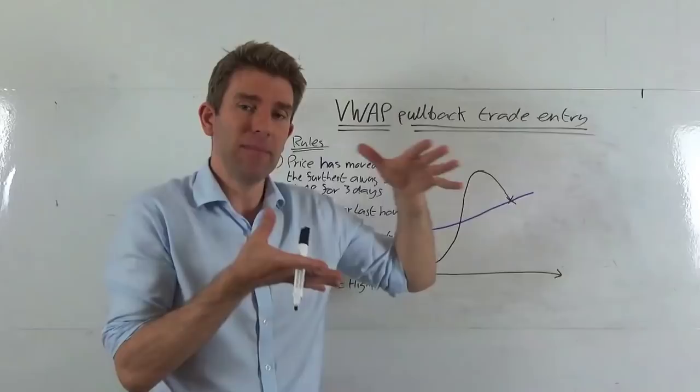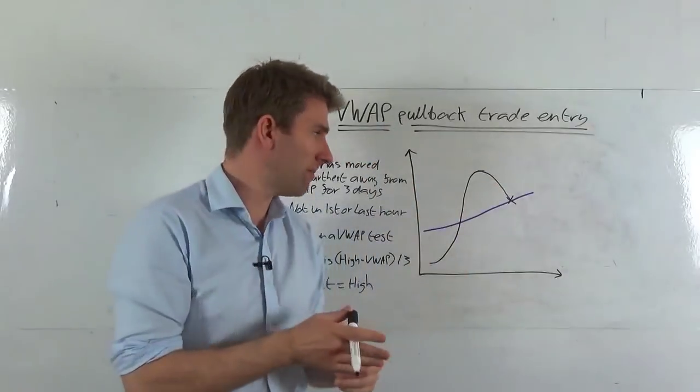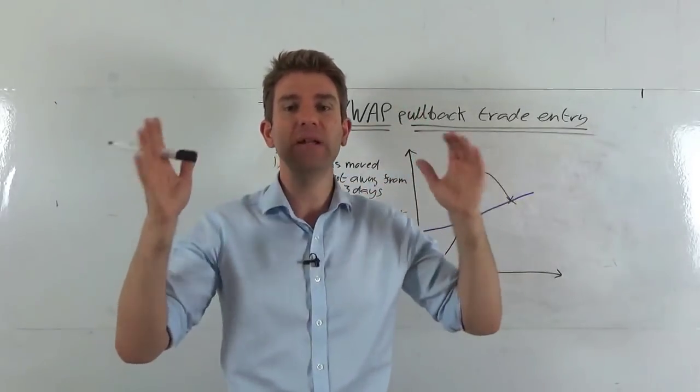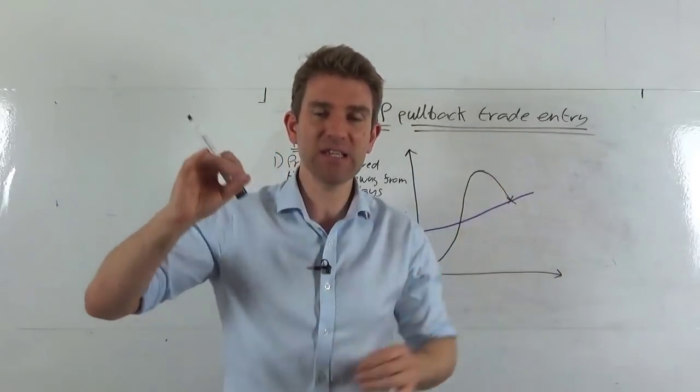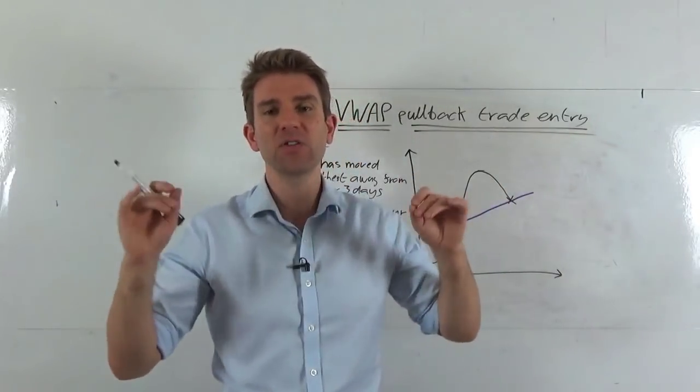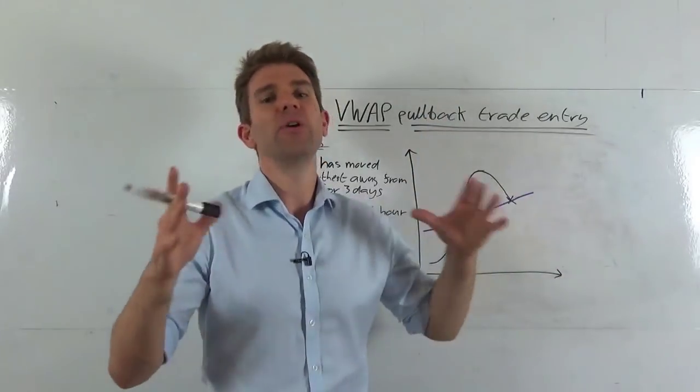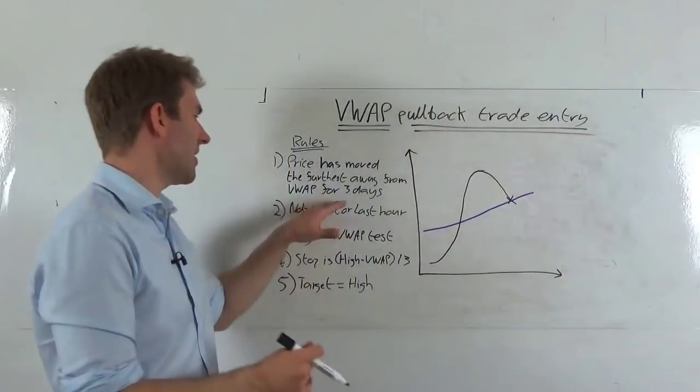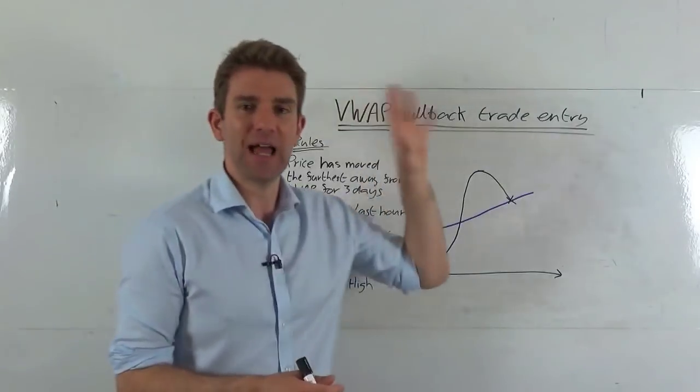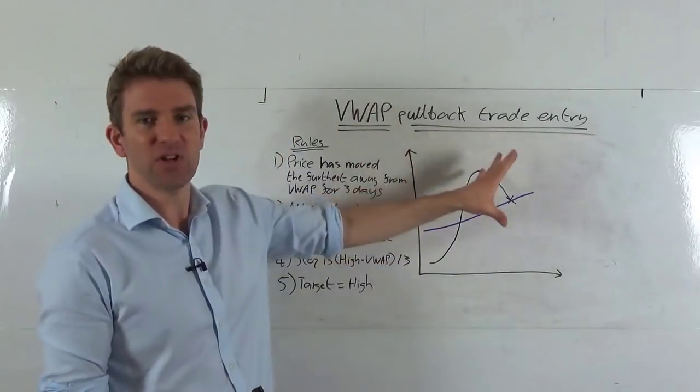But if it's still going, it means that there's something interesting going on. We're looking for the furthest move that's been in the last three days, so the biggest distance away from the VWAP in the last three days. And that's going to be easy to eyeball. You could probably do a custom indicator for it, but you get the idea I think. So once we've got that filter and we've seen something that's moving quite a big extension away from the VWAP, bigger than it has done for the last three days, we then look at number two.